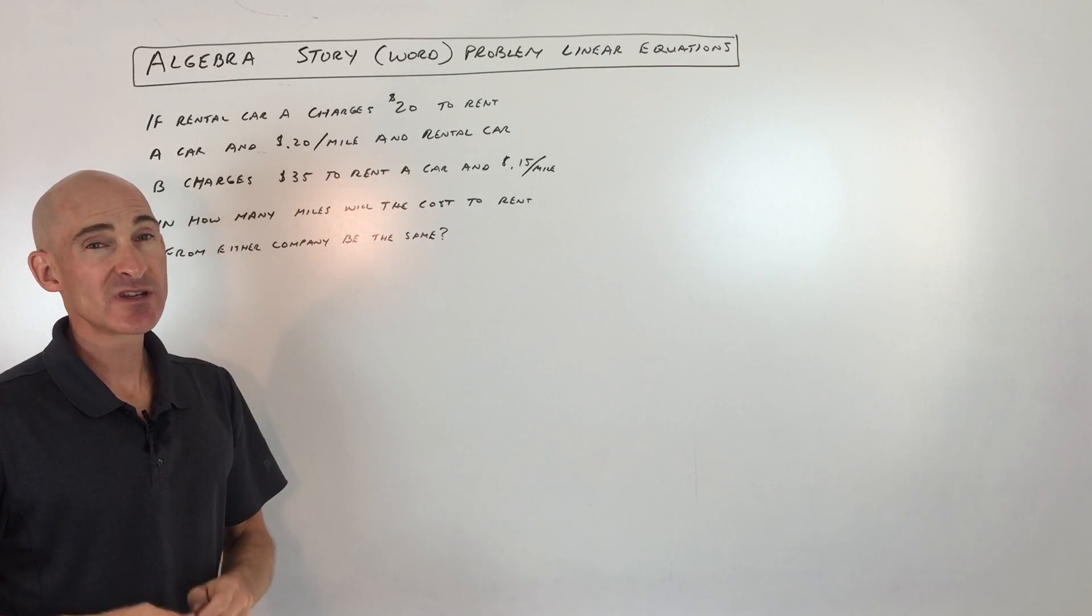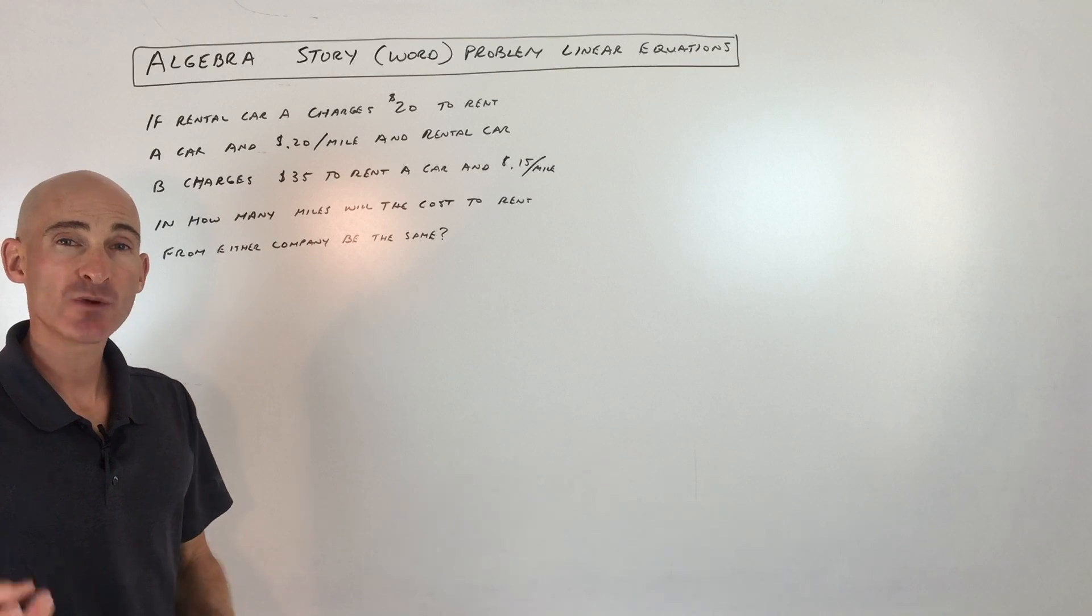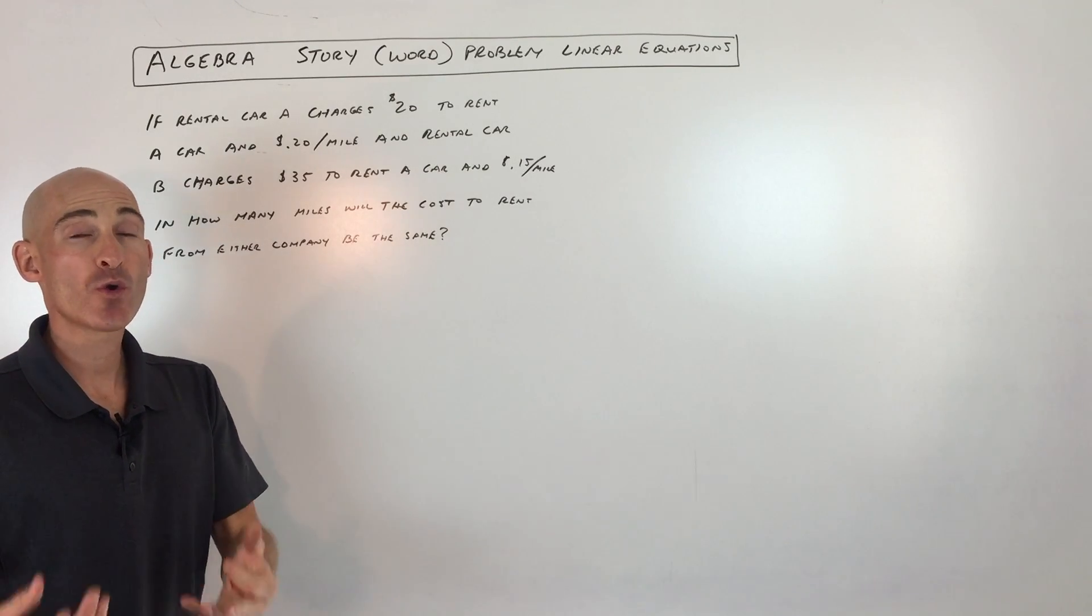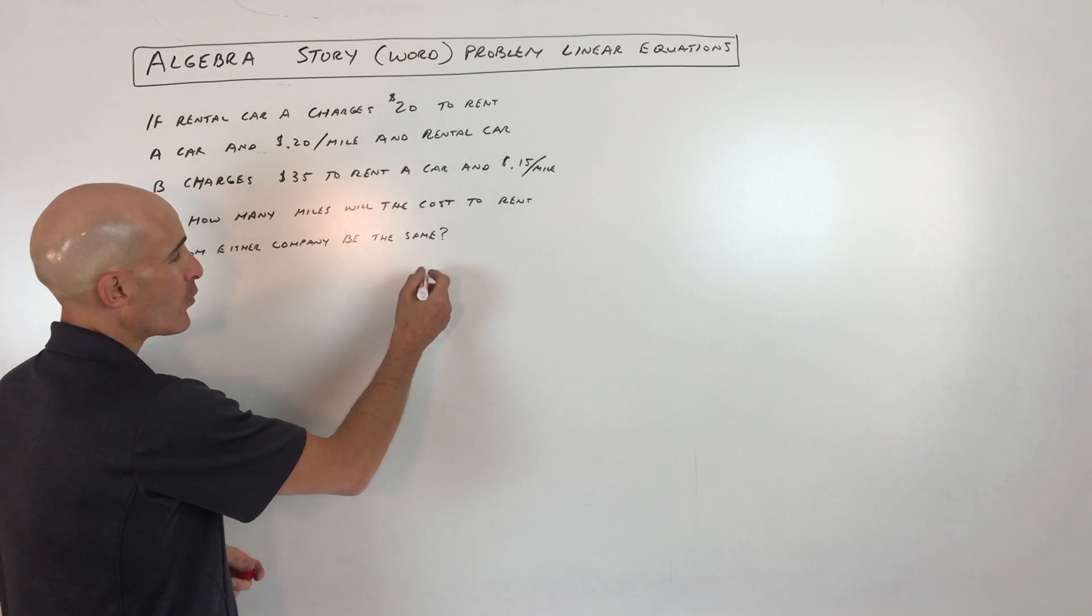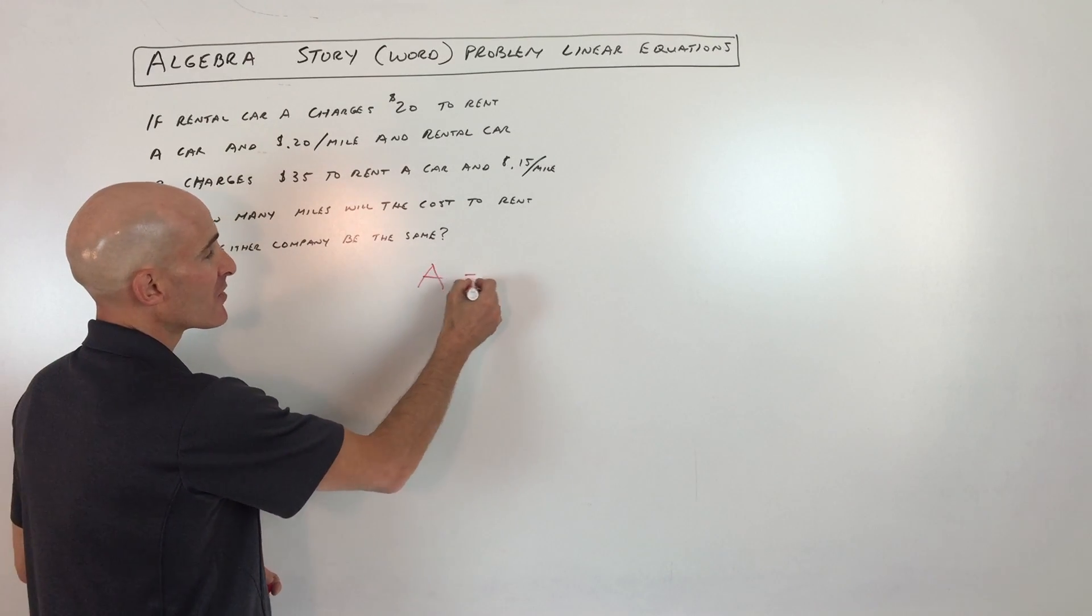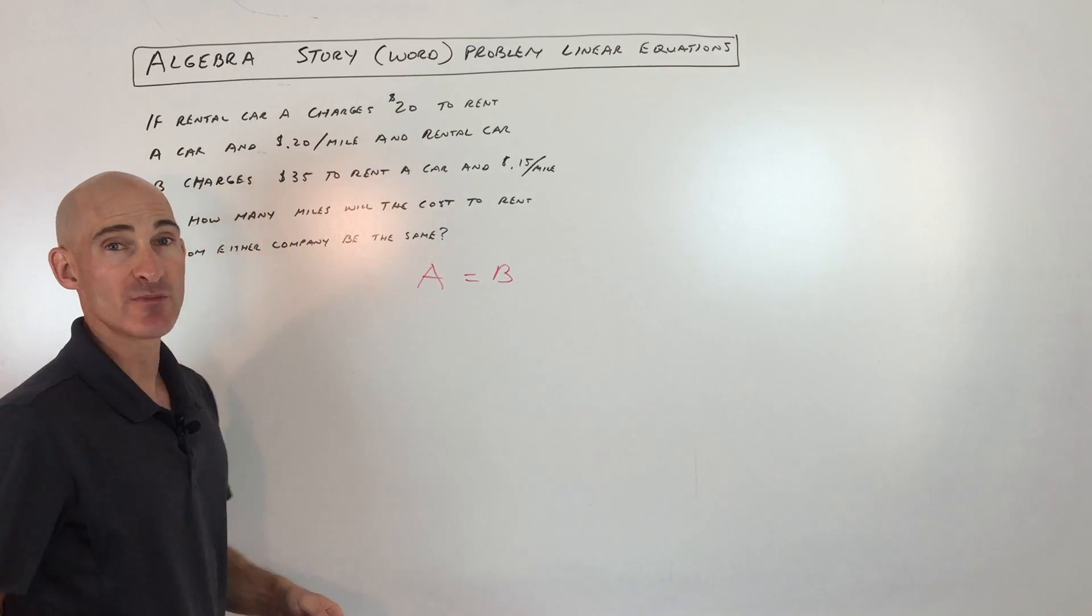A lot of times students get a little bit intimidated by word problems or story problems, and what I recommend is just go ahead and write it as a word equation first. So we're trying to find out where renting from company A is going to equal renting from company B.